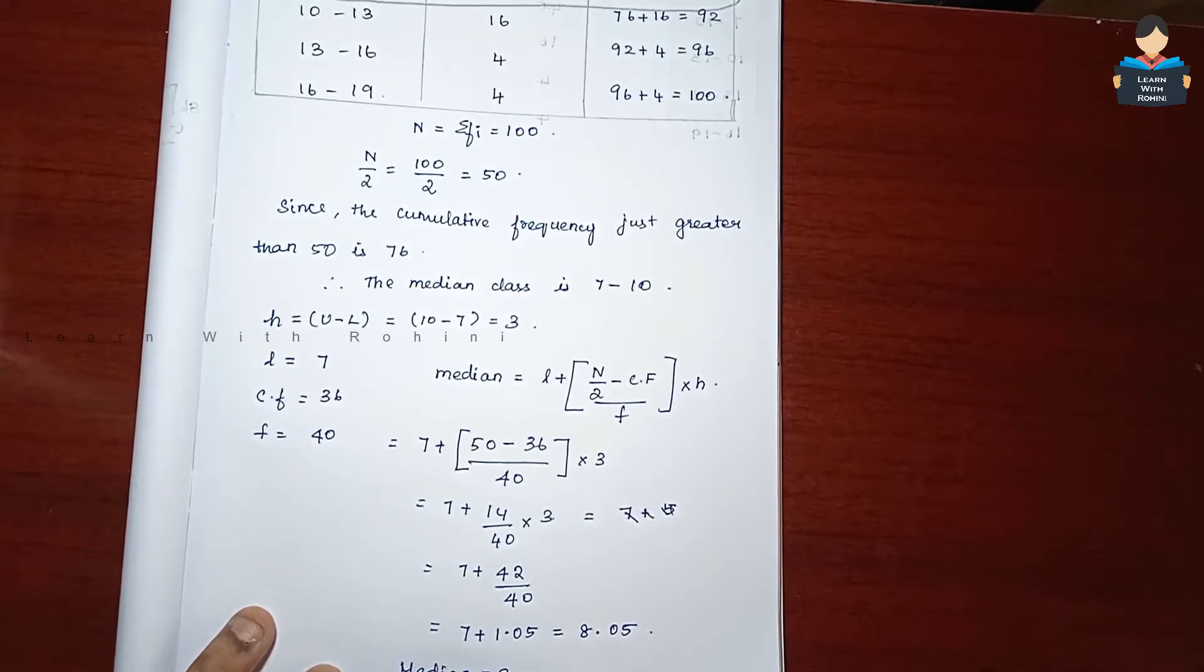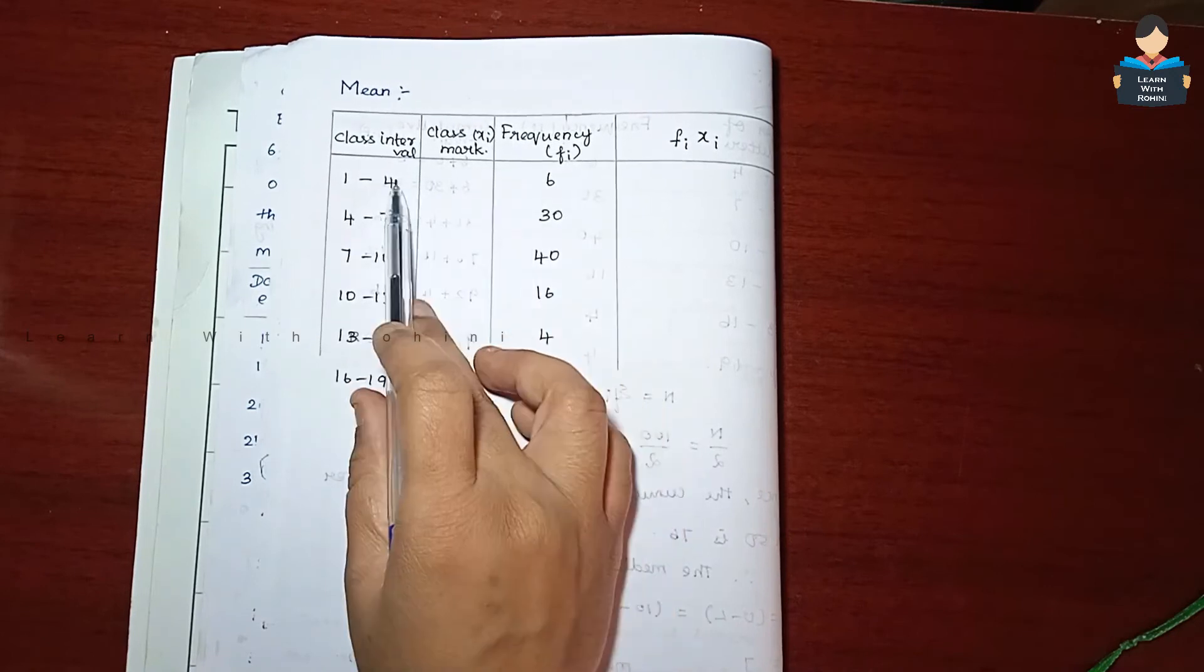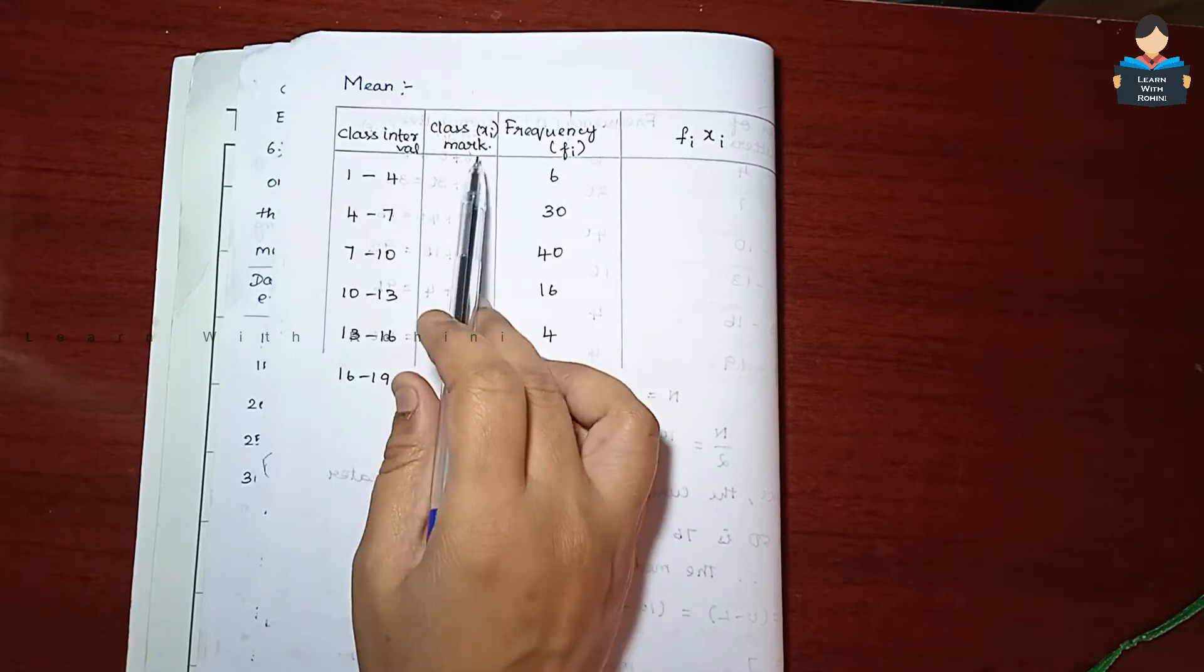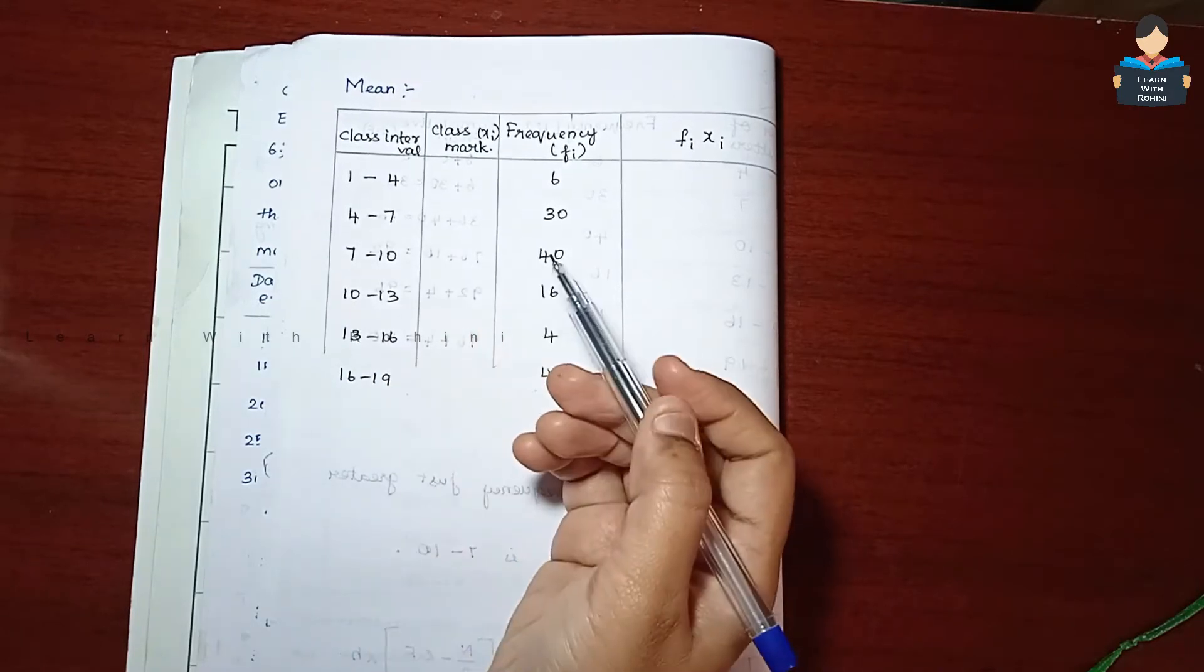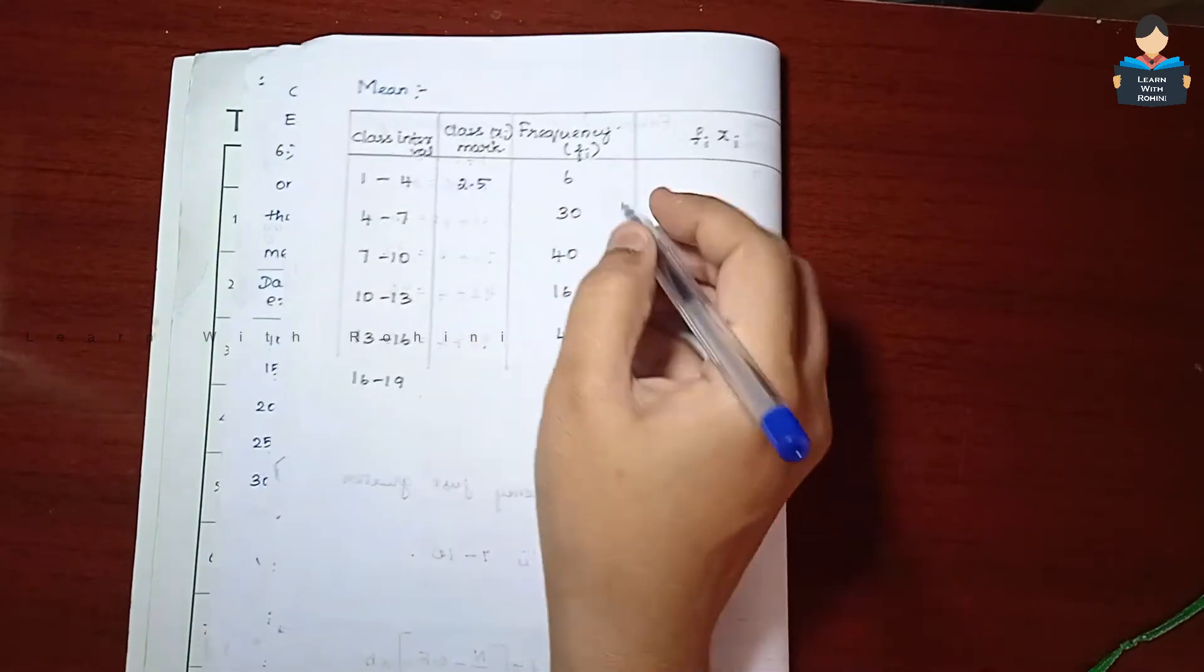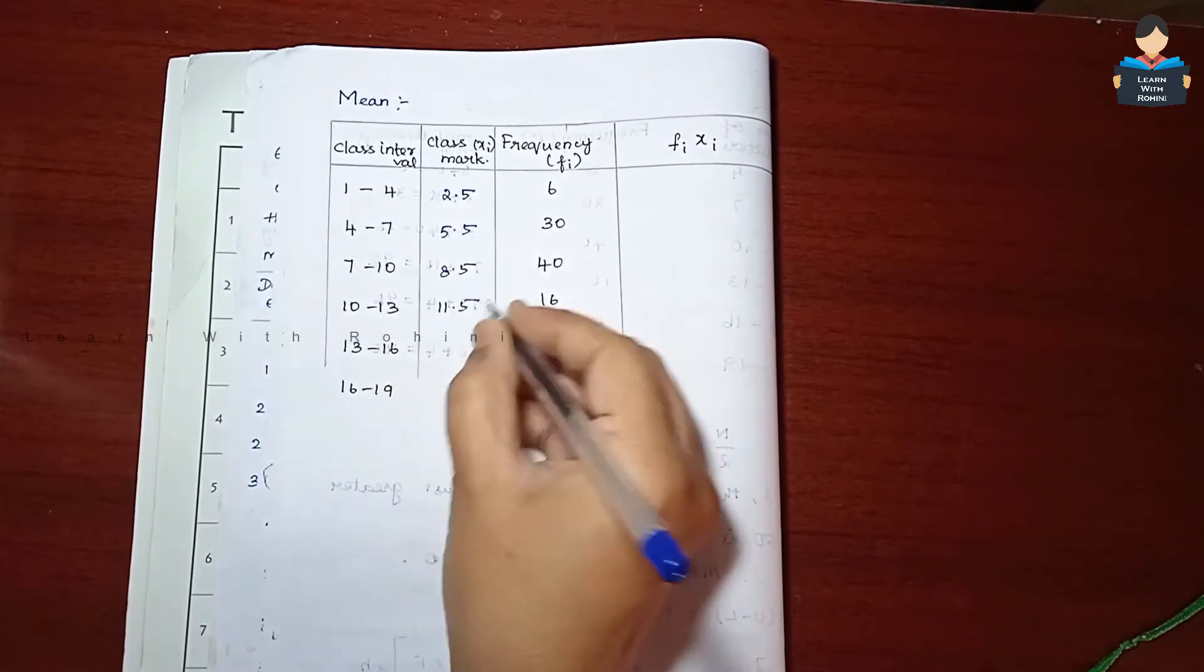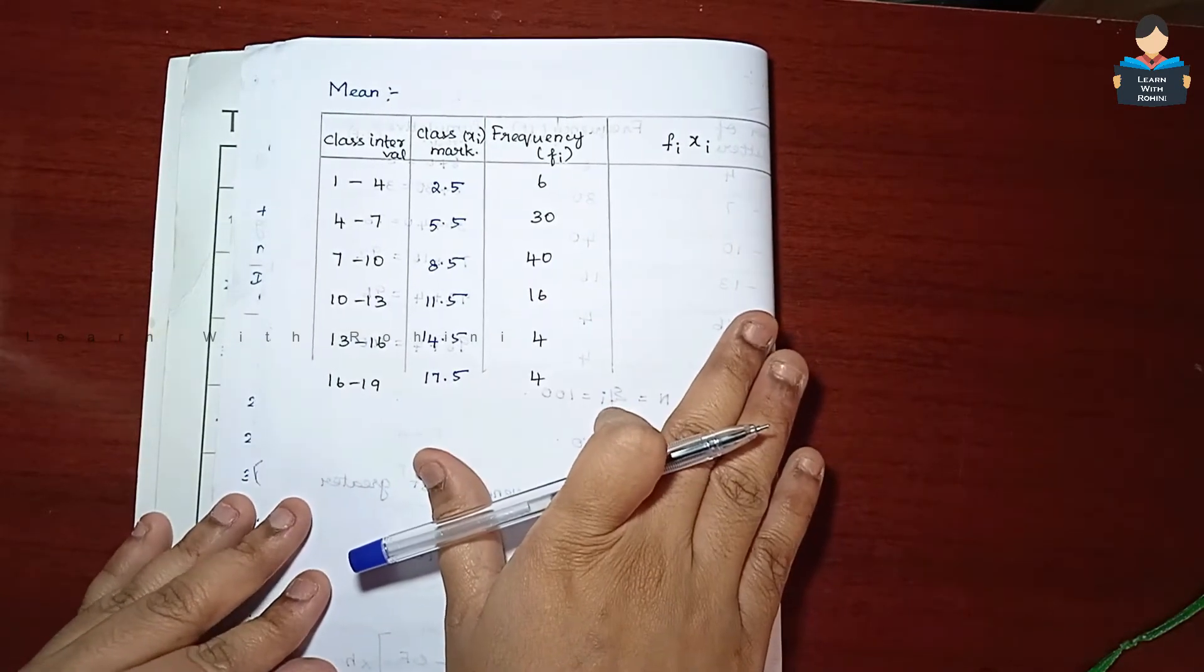Now the next one is mean. For the mean, we use class mark, the class mark is XI value. That means we know that upper limit plus lower limit by 2. Class mark 4 plus 1 by 2, which is 5 by 2, equals 2.5. Then 5.5, 8.5, 11.5, 14.5, and 17.5.